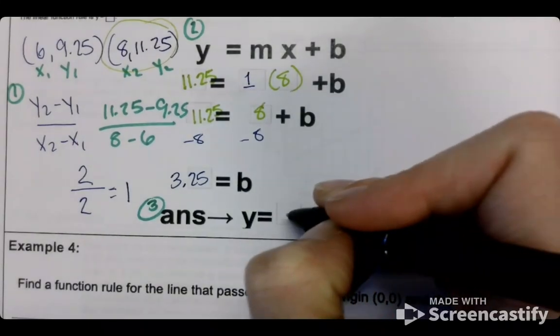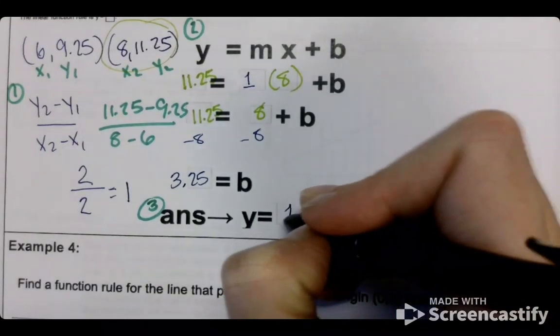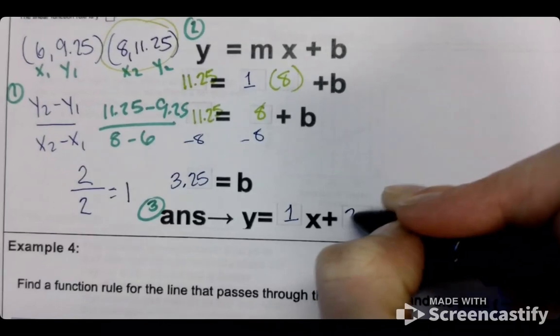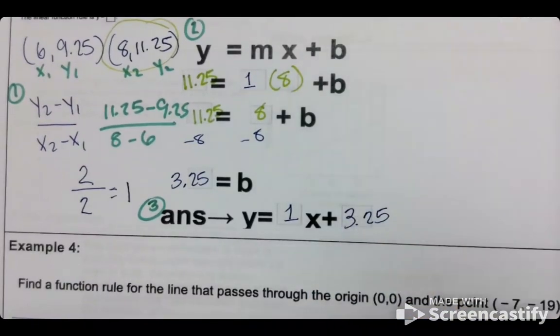We plug in. Good. So what's going to go here? A 1. What's going to go here? 3.25. Awesome.